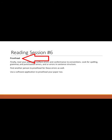Finally, reading session six is the proofread. With your printed copy, read your paper for surface errors and conformance to conventions. Look for spelling, grammar, punctuation, fragments, run-on sentences, capitalization problems, and how you've treated numbers throughout the paper. Check your works cited for consistency. Look for clumsily written sentences that could be shorter or more graceful. Have another person proofread as well, since it's easy to skim over your own errors. Also use a software application like Word or Grammarly.